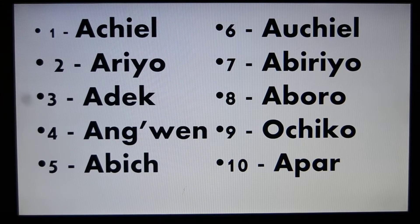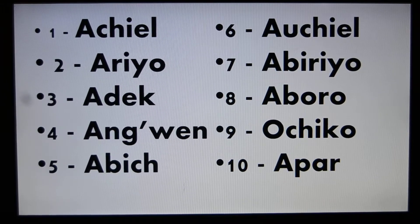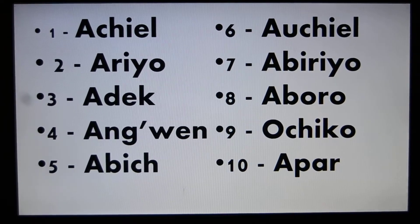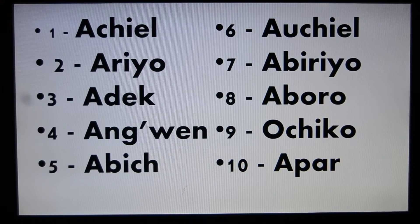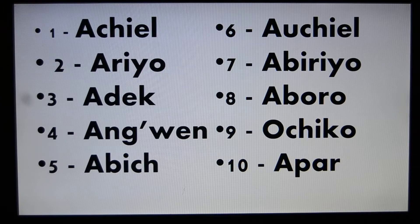That means 10, 20, 30, 40, and so on. In between you have: PIERO ARIO GI ACHIEL — that is 21; PIERO ADEK GI ACHIEL — that is 32; PIERO ADEK GI ABICH — that is 35; PIERO ABOA GI ABIRIO — that is 87. And so forth.